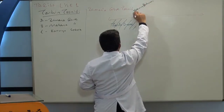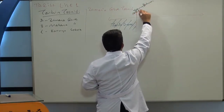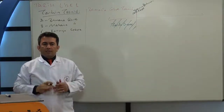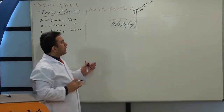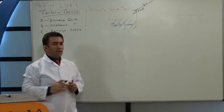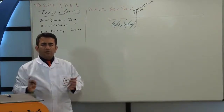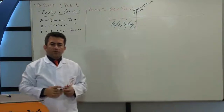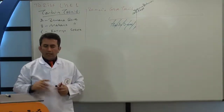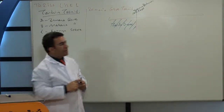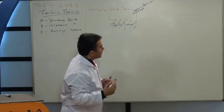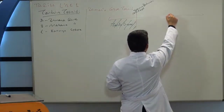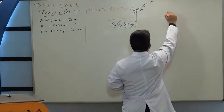Yazının bulunması M.Ö. 3200'dür. Demek ki arkadaşlar, yazının bulunmasıyla birlikte insanlık tarih öncesi çağlardan tarihi çağlara geçmiştir. M.Ö. 3200 yıllarından günümüze kadar geçen dönemde tarihi çağlar diyoruz. Tarihi çağlarda da bir başka önemli husus daha var: milat kavramı.